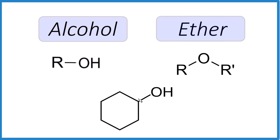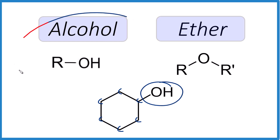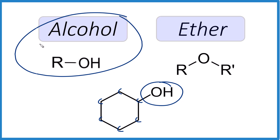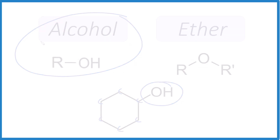Actually, let's do one last one. Pause — is this an alcohol or an ether? Here are our carbons; they'd be bonded to four things, so there'd be hydrogens on them. But right here, carbon bonded to this OH group — it's got to be an alcohol. So that's the difference between alcohols and ethers. This is Dr. B, thanks for watching.